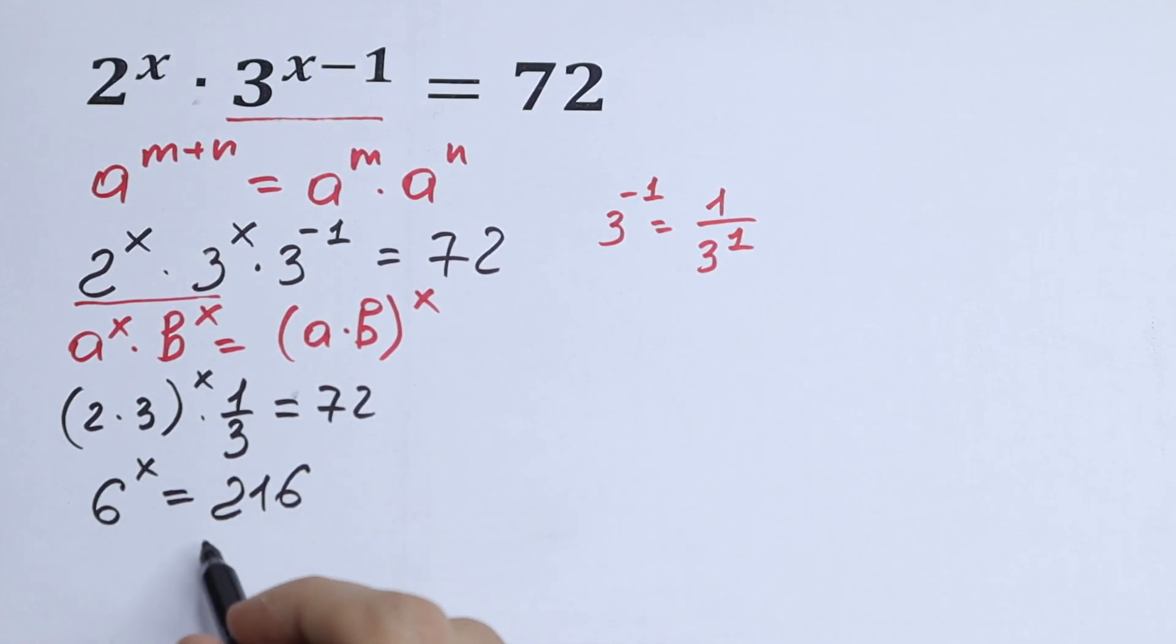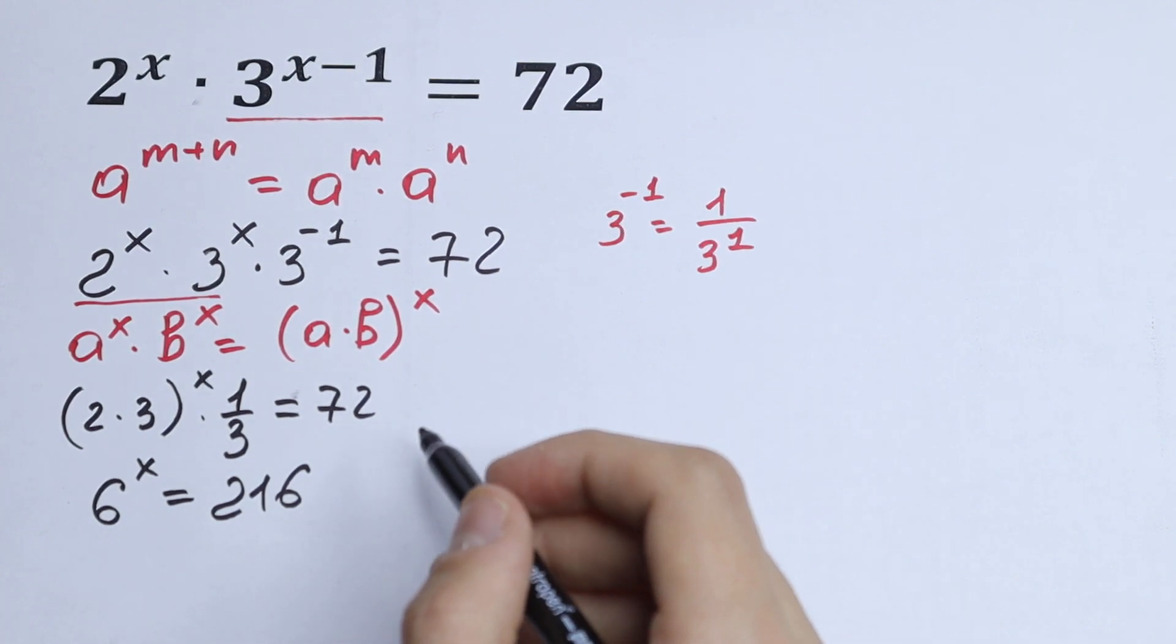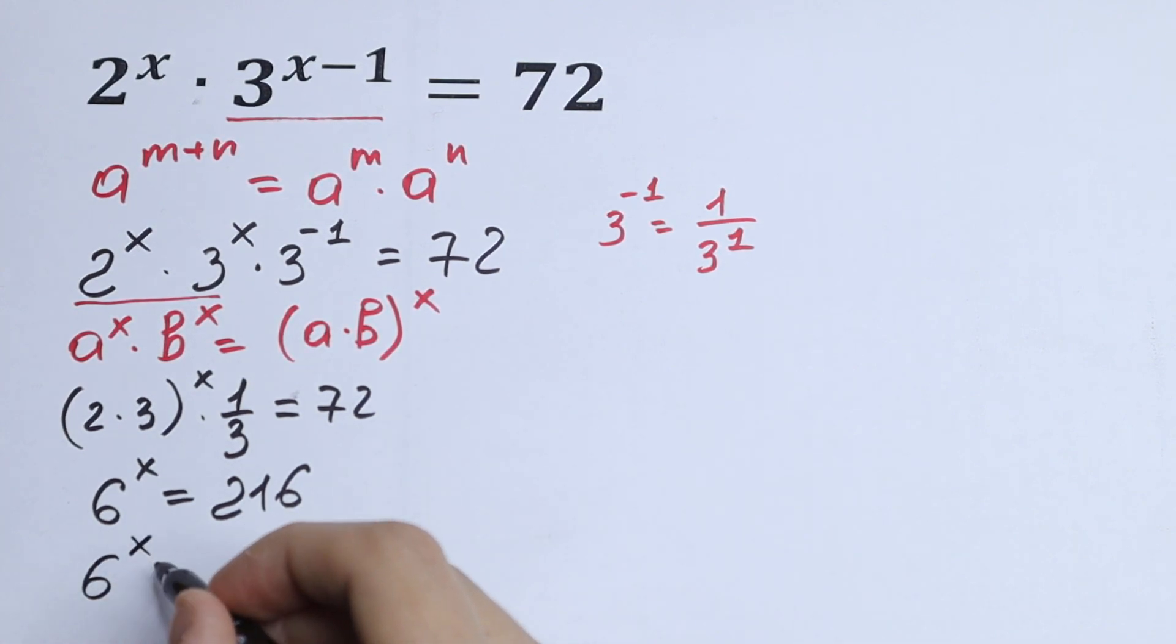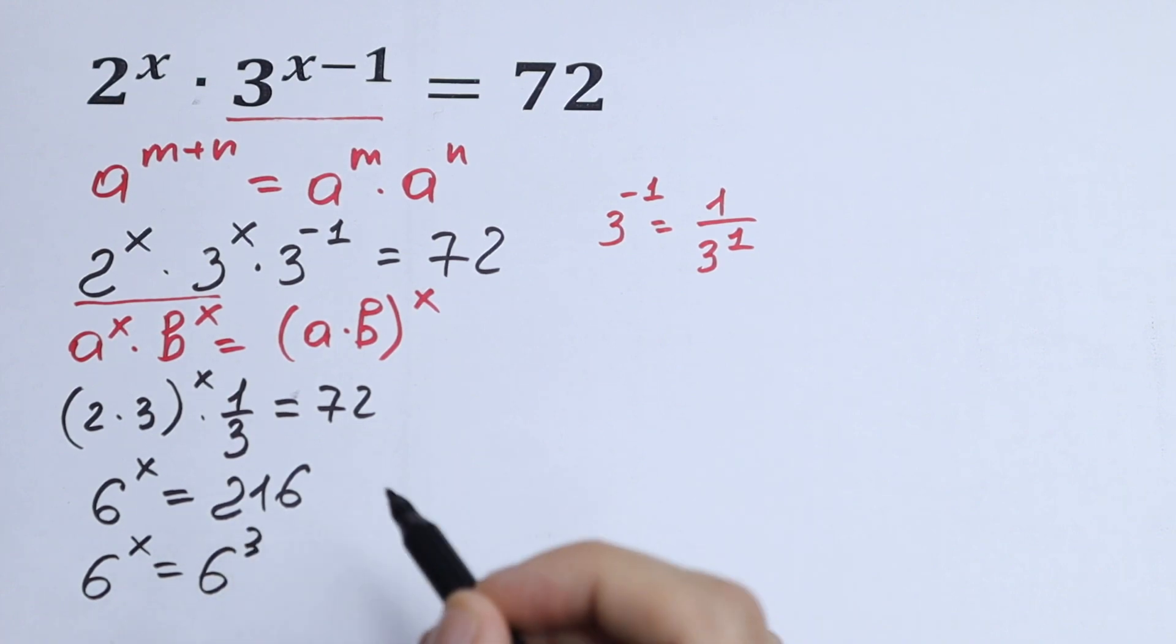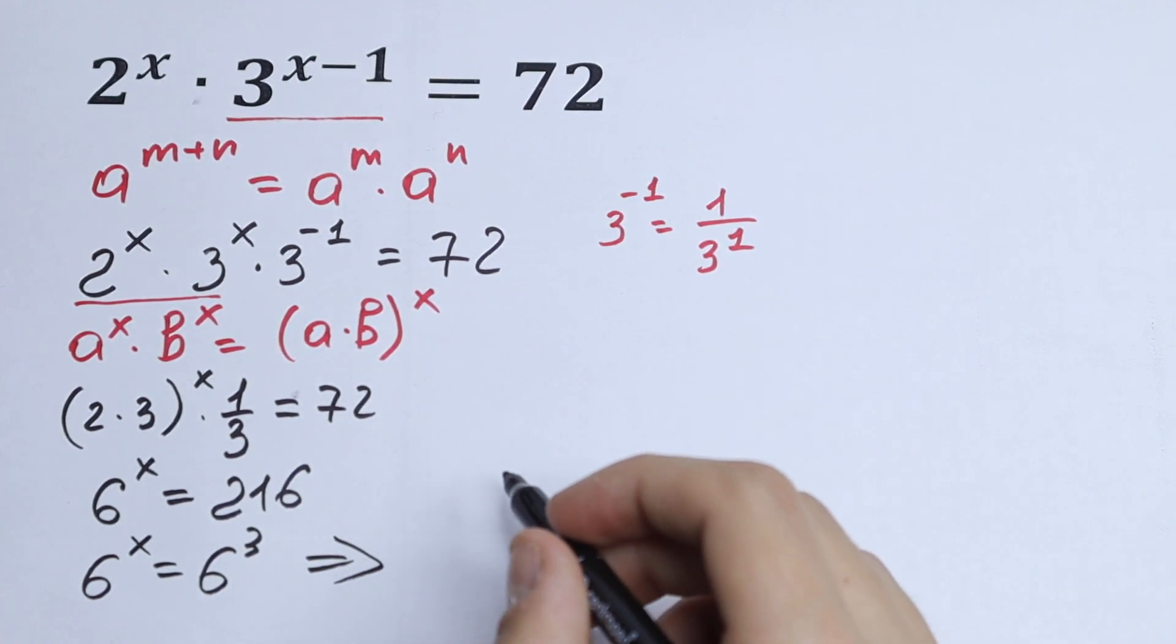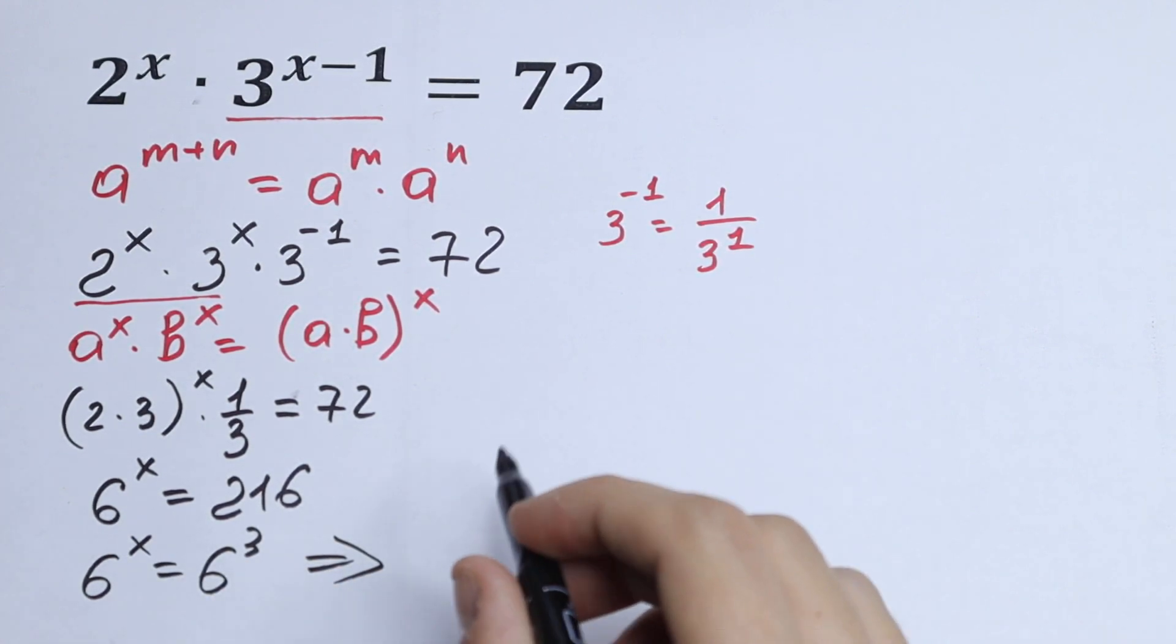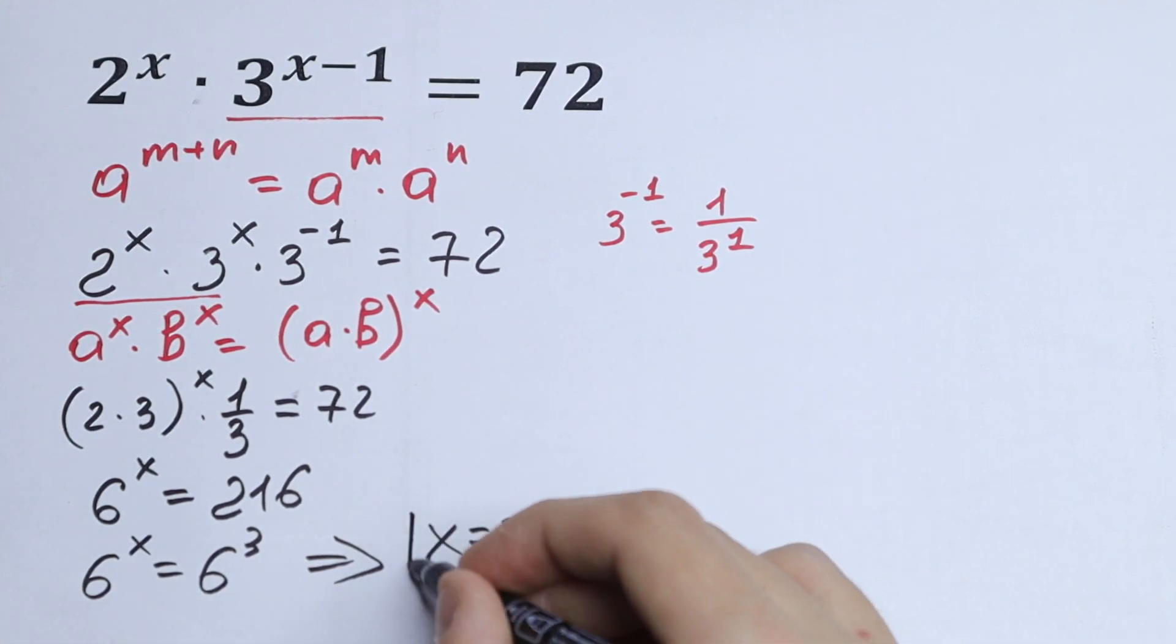Real good case right now, because we know that 216 we can write as 6 cube, and then we will have 6 to the power x equal to 6 cube. And from here the obvious solution, because we need to match the exponents, x equal to 3.